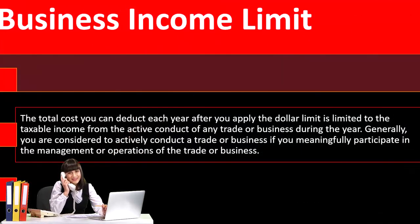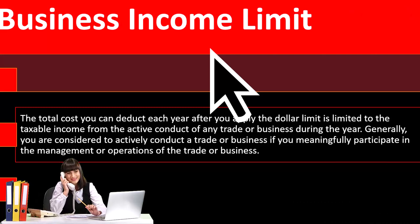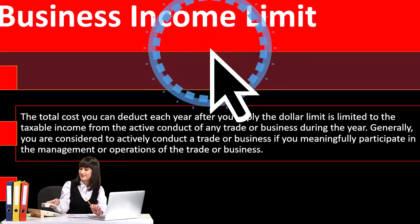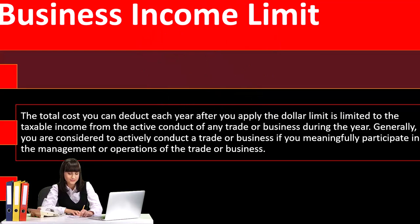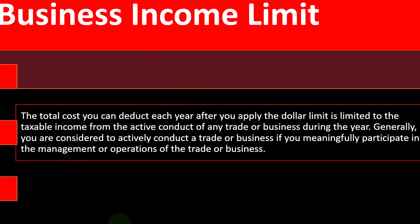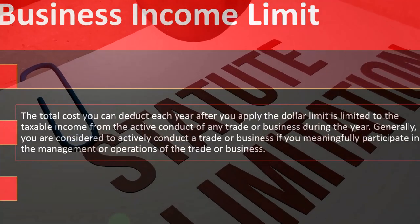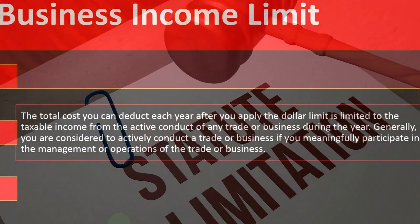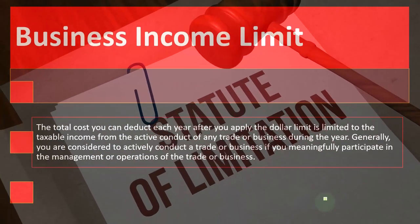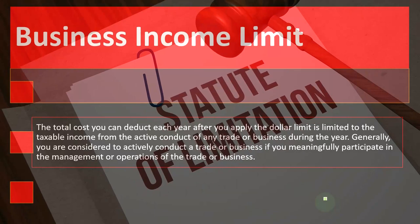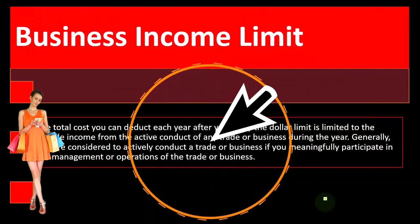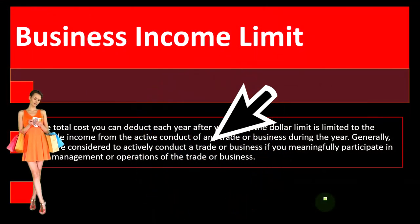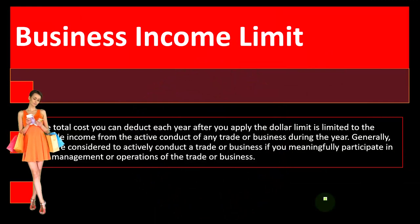This is the third part of our Section 179 deduction discussion. We're now taking a look at the limitations on the amount that you might be able to deduct. We looked at dollar limitations in prior presentations; now we're looking at the business income limit. The total costs you can deduct each year after you apply the dollar limit is limited to the taxable income from the active conduct of any trade or business during the year.